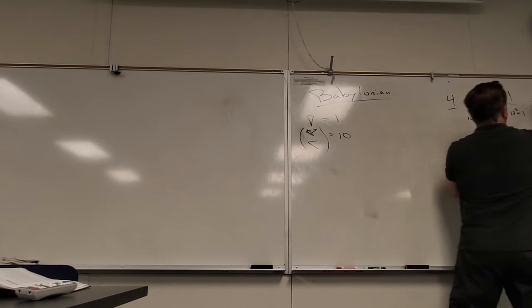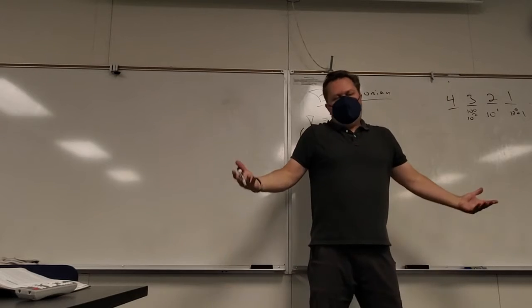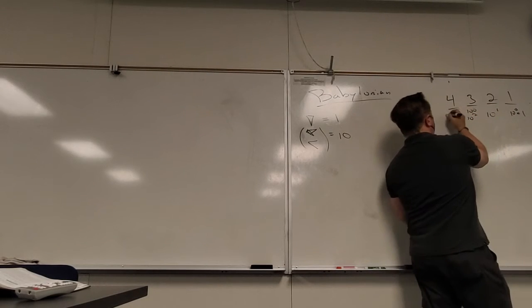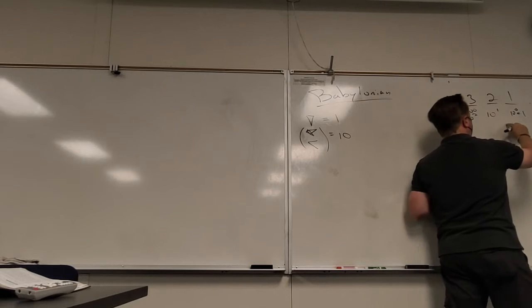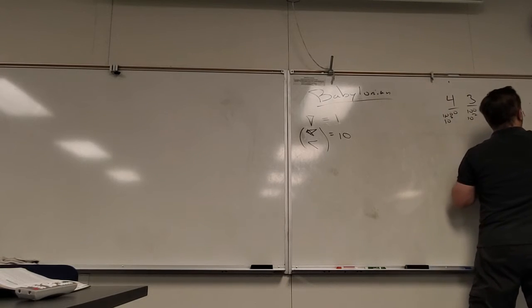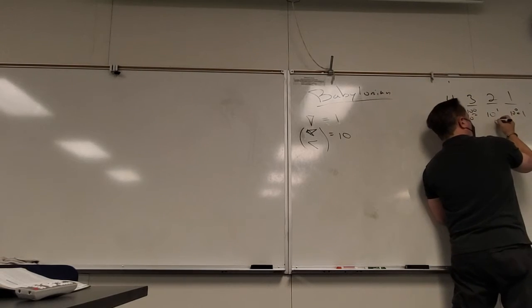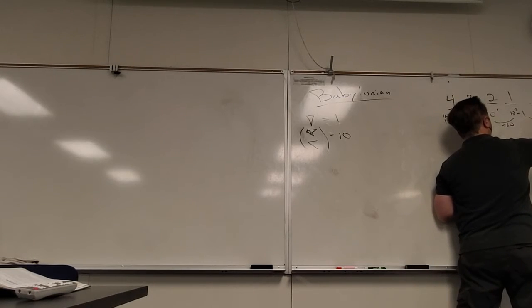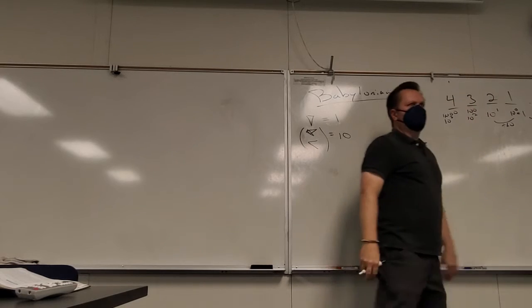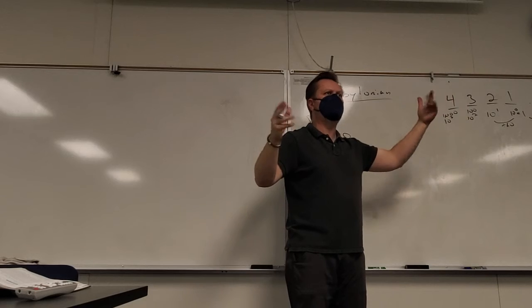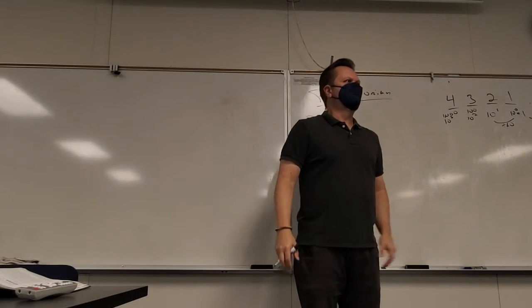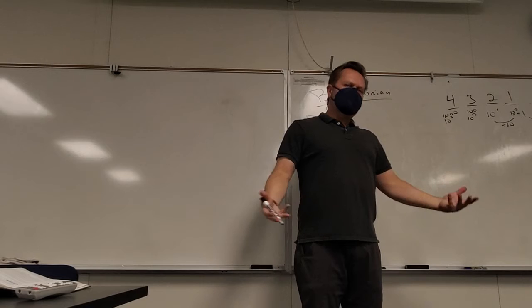Babylonians are one of the civilizations that had a place value system. So very quickly, in this number 4,321, what does this place mean for us? One. What does this place mean? Ten. So every time I take another step up, of course, multiplying by ten, correct? So of course this place means hundreds, which is ten squared.